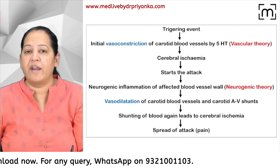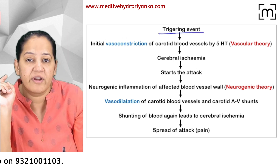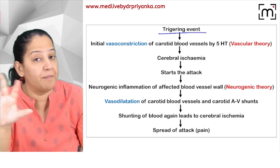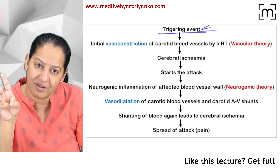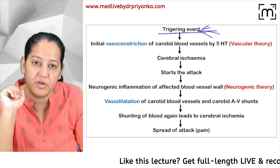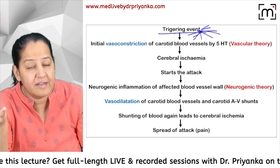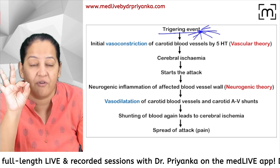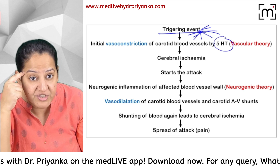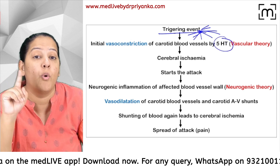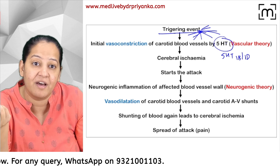Different people have different triggering events. Without a trigger, migraine won't happen. Triggers can be anger, stress, certain foods, weather change, hormonal change, light, loss of a meal, excess sleep, or deprivation of sleep. Whatever the trigger is for that particular person, it causes release of 5-HT in the brain.